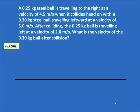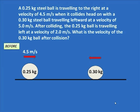We'll begin with what's called our before picture, and here's how it works. We read it through and draw it. A 0.25 kilogram steel ball traveling to the right at a velocity of 4.5 meters per second collides head-on with a 0.3 kilogram steel ball traveling leftward. The velocity is 5 meters per second.